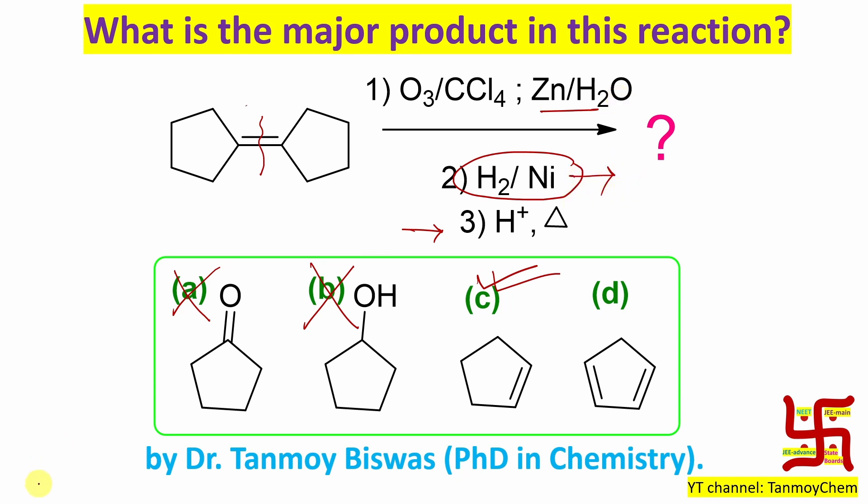Now ozonolysis first step: carbonyl compound. Second step: nickel hydrogen. Carbonyl compound will not survive. So from that point, if I say, then option A gone. Second, you can say in the second step alcohol. Third step, acid heat is given. Alcohol cannot survive. Heating is given. It is not a workup heating, so this is not possible.